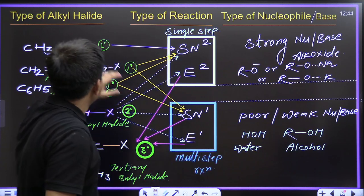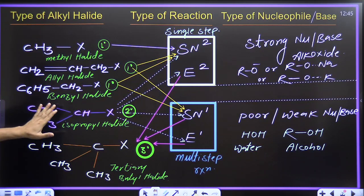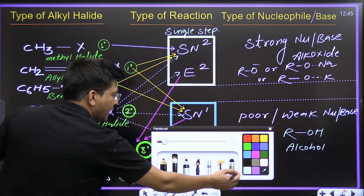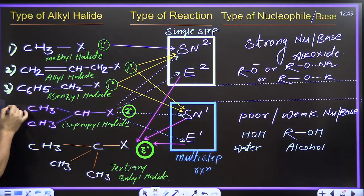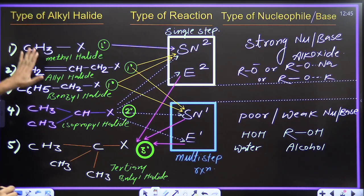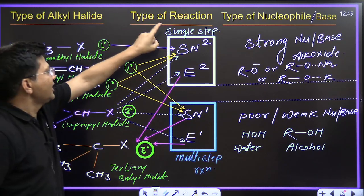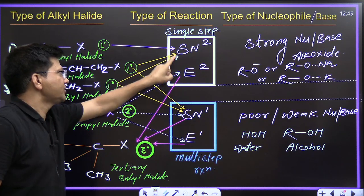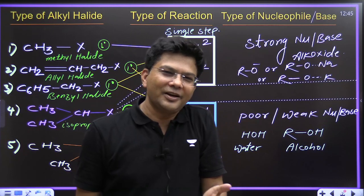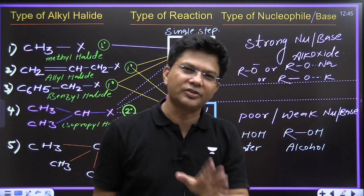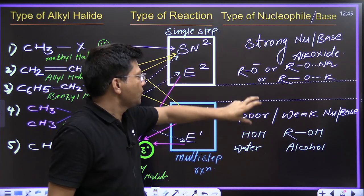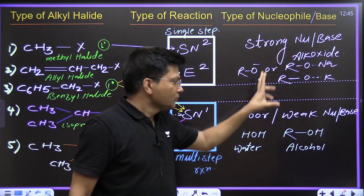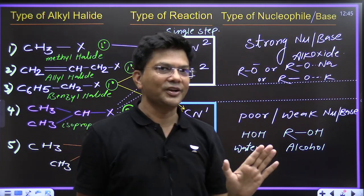See everyone — type of alkyl halide. Just treat the type of alkyl halide as doctors. There are 5 types of doctors. These are 4 types of patients: SN2, E2, SN1, E1. It's just an analogy I have tried and it's working — 100% it will work, mark my words. And these are 2 types of parents: strong nucleophile/base and poor nucleophile/base. I will let you know each and everything one by one.